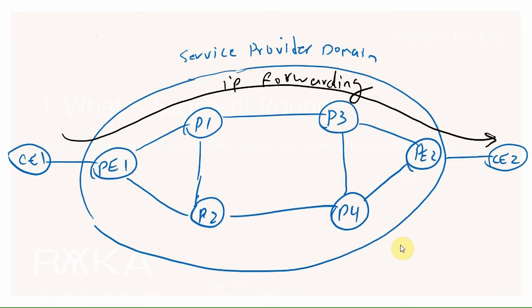When forwarding in an IP network, the data traffic always goes over a certain path which is the best path chosen by IGP. Here we assume it goes from above: PE1, P1, P3, PE2, and then destination. One problem we face in an IP network is that the traffic will not be directed to another path when that path is congested, even if that path is the best path.